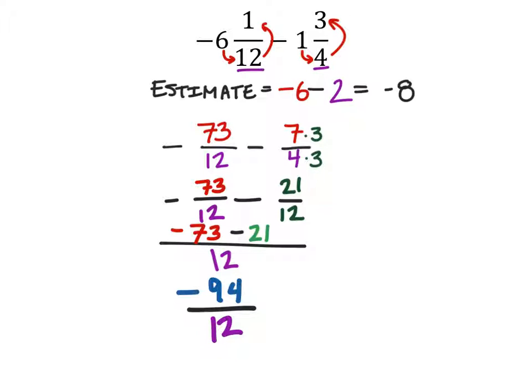And this can be simplified. We can see at least that these two are divisible by 2 because they're both even so let's try that out and see where it gets us. That's a negative 47 over 6 and 47 and 6 don't have any common factors so we can leave it like this.